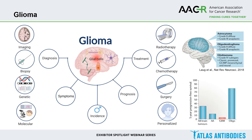Gliomas represent over 30% of all CNS tumors and over 80% of malignant brain tumors. Gliomas arise from glial cells: astrocytes, ependymal cells, and oligodendrocytes. Each of these glial cells can give rise to a distinctive type of cancer called astrocytomas, oligodendrogliomas, and glioblastomas.